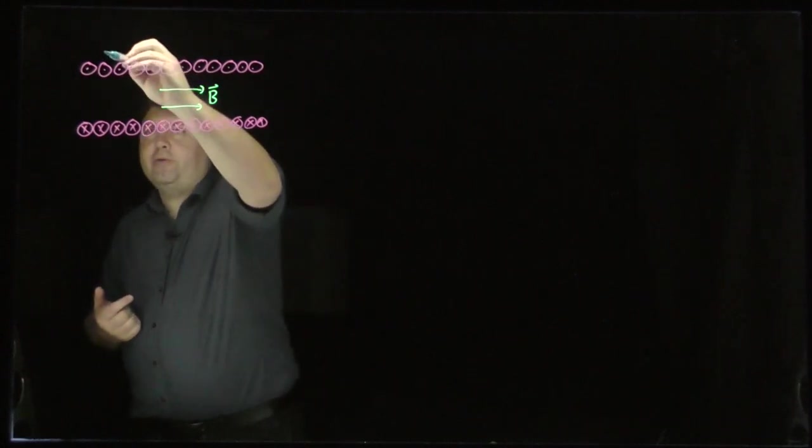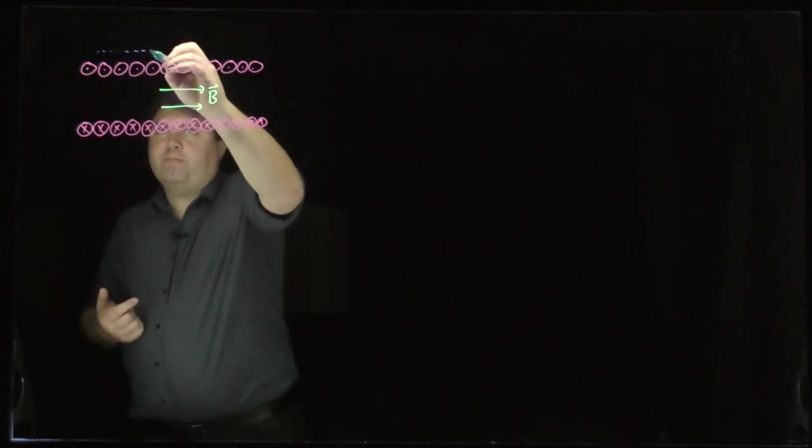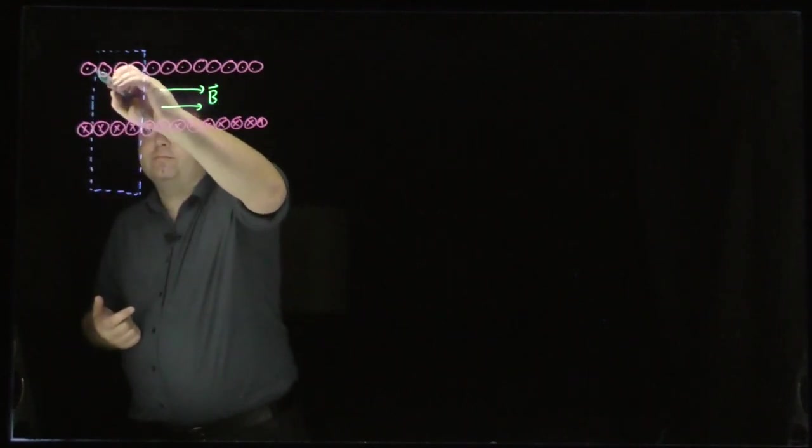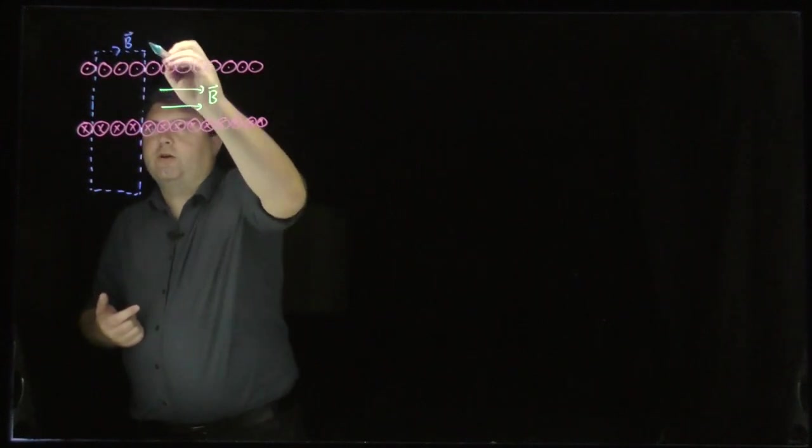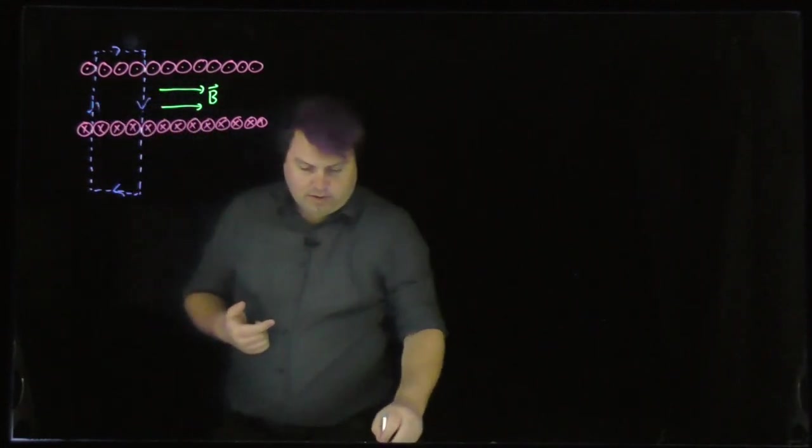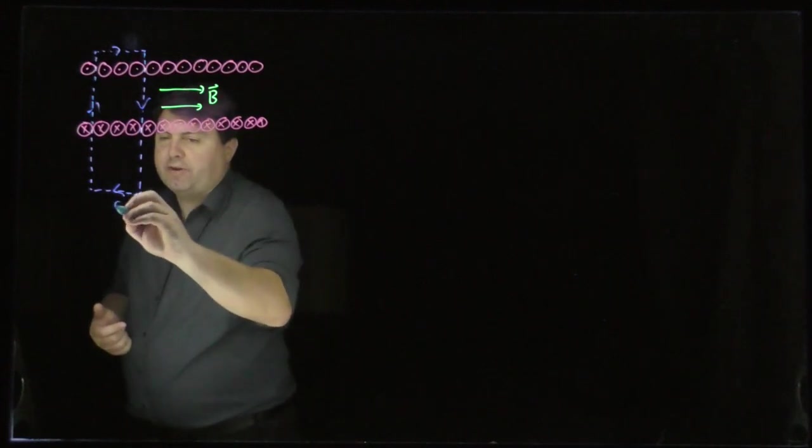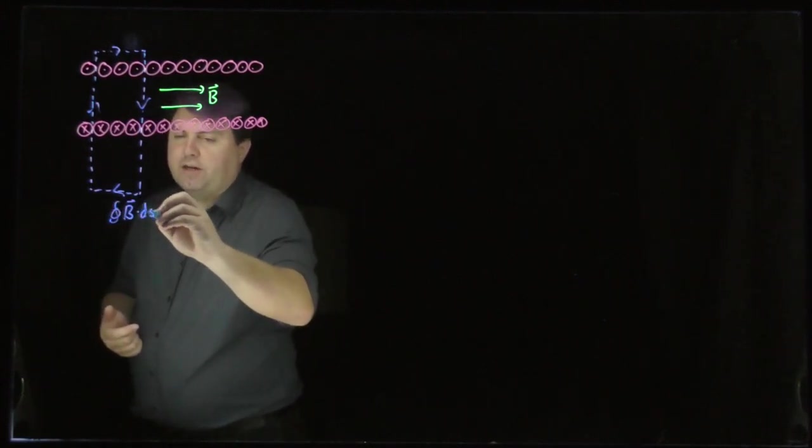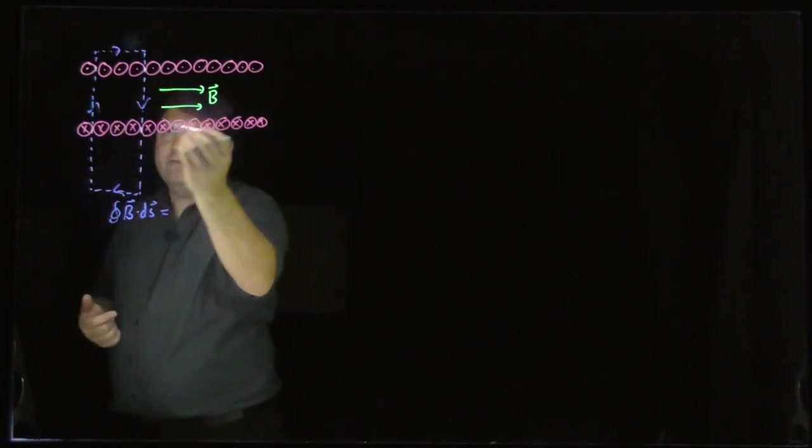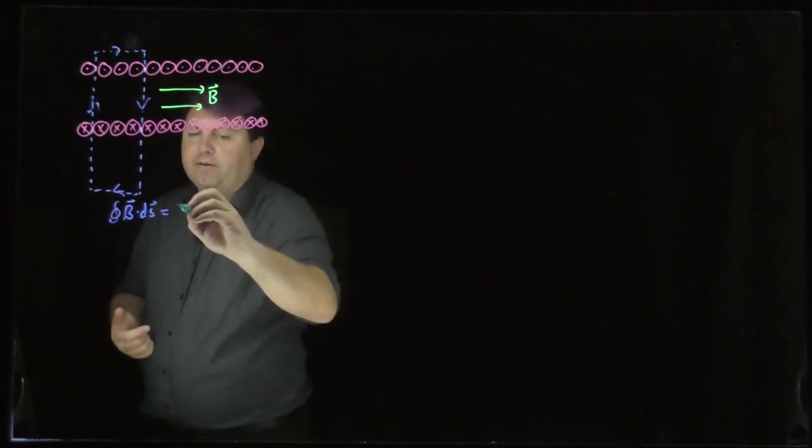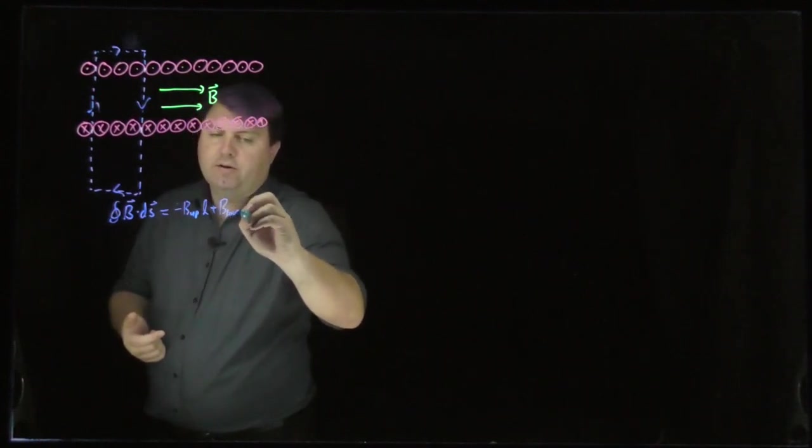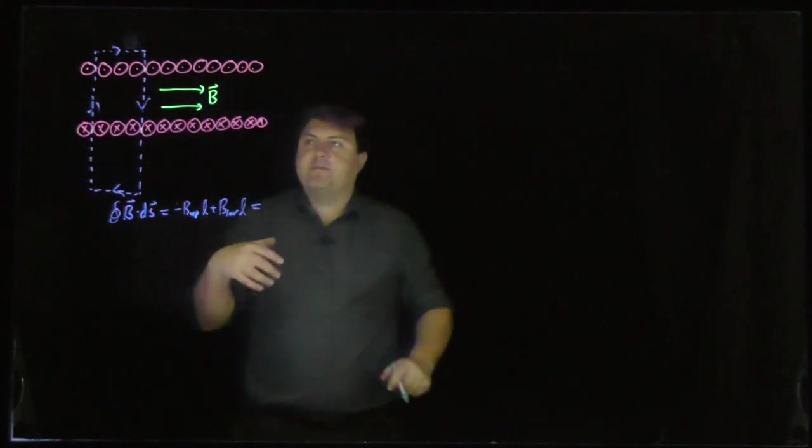So one thing we could do with Ampere's law is we could make an Amperian loop that starts above the solenoid and goes quite a bit down below the solenoid. We're going to have some sort of loop here and then continue along. And what we can do with this Amperian loop is, we've got this closed integral of B dot ds is then going to be, if the magnetic field is this way in this direction, then it has to be returning back in this. So we have the negative B upper times L plus B lower times L and that's equal to mu naught times the current enclosed.